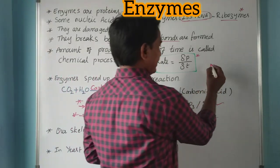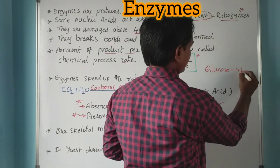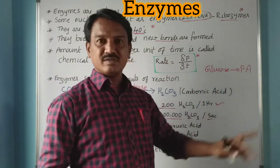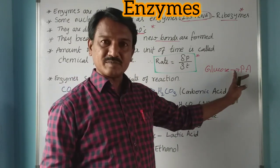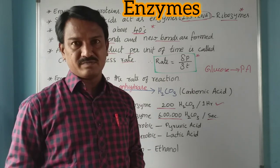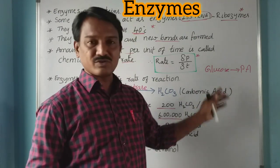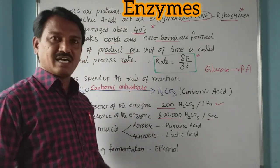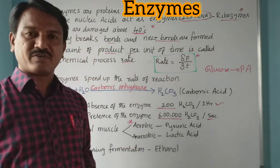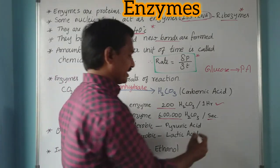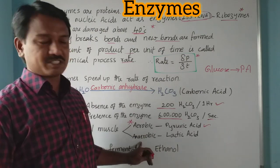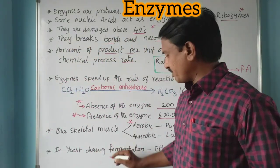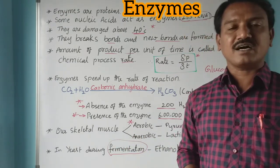For example, in our body, glucose is converted into pyruvic acid through a multiple-step pathway. Several enzymes are involved in this chain reaction. In the presence of oxygen this is an aerobic process; in the absence of oxygen, anaerobic respiration occurs and lactic acid is formed. In yeast, fermentation produces ethanol.